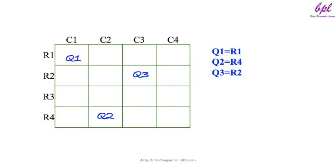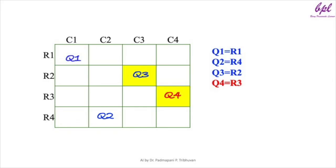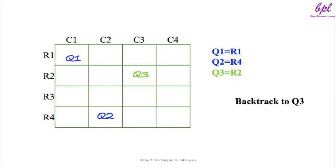Next we place queen 4. We try q4 = r1 but this violates both the row constraint with q1 and the diagonal constraint with q3. We move q4 to row 2 but this violates the row constraint with q3. We try q4 = r3 but this violates the diagonal constraint with q3. Lastly, we try q4 = r4 but this violates both the row constraint with q2 and the diagonal constraint with q1. Since no valid position is available for q4, we backtrack to queen 3.